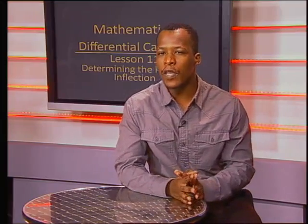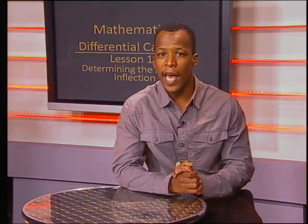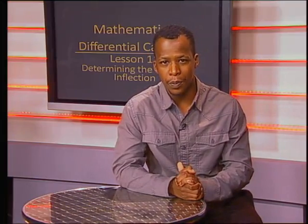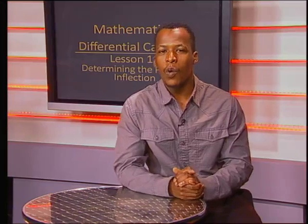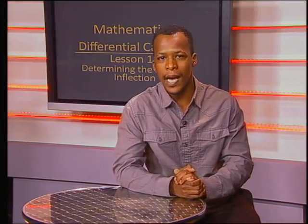Remember that we are trying to find the point of inflection, so we need to find the x value and the y value. Let's substitute the value of x into the function y equals 2x cubed minus 8x squared minus 2x plus 8.